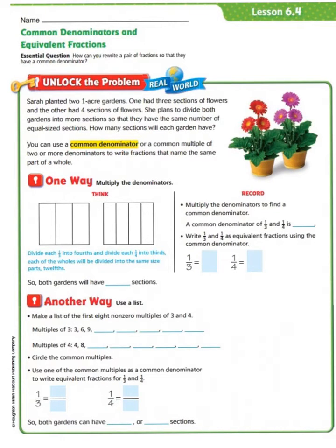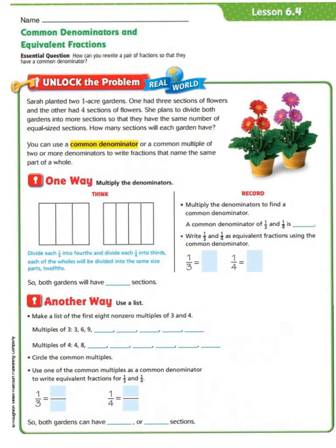Let's begin by looking at one way we can do this, and that is to multiply the denominators. If we have our two gardens, we divide each one-third into fours. So we begin with our garden that is divided into three, and we begin by taking that and dividing each of our thirds into fours.